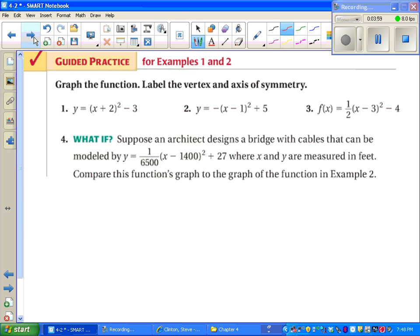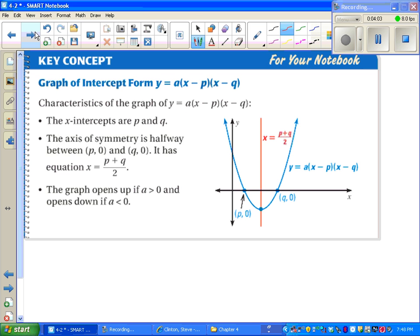At this point, you can pause the video and try these on your own, or you can do that later. Next, we're going to look at how to graph intercept form. It's called intercept form because looking at a factored quadratic function tells us the X intercepts. As we can see in the picture, notice that the signs change.